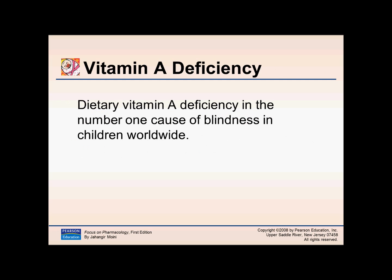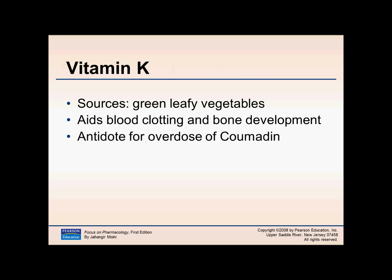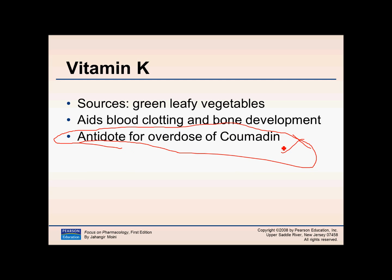Vitamin A deficiency is the number one cause of blindness in children worldwide. Vitamin K — sources include green vegetables — aids in blood clotting, and it is also the antidote for Coumadin, which we'll discuss in a later lecture. It is very important not to confuse vitamin K with potassium — one is a vitamin and one is a mineral. Students often confuse those, so keep that in mind.